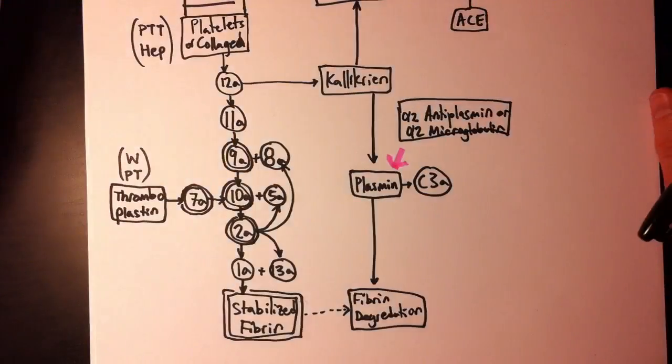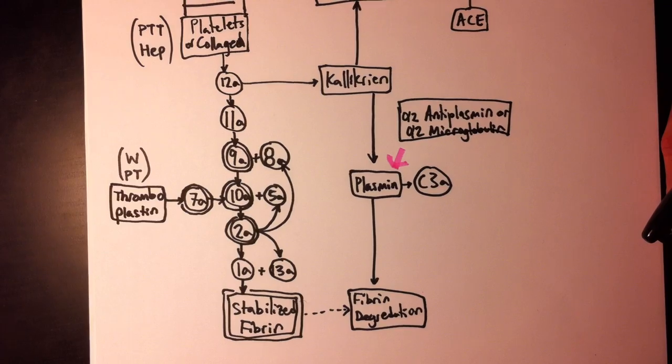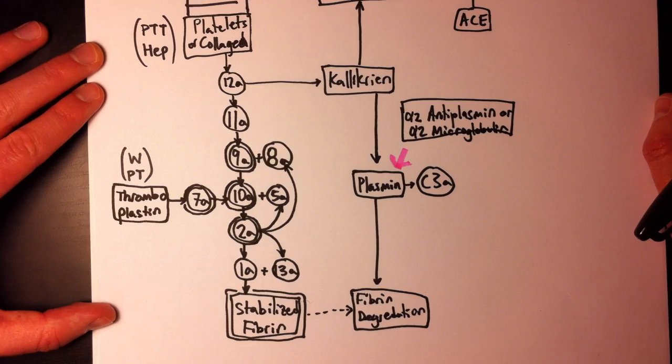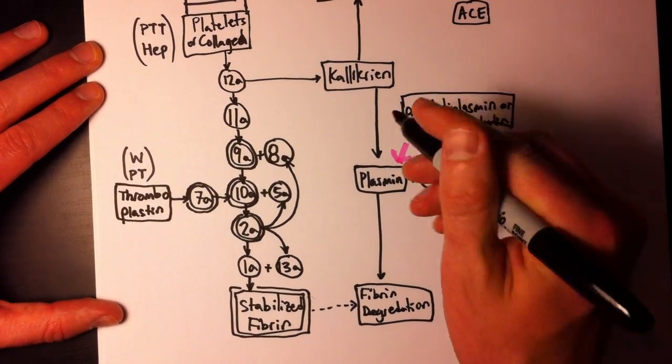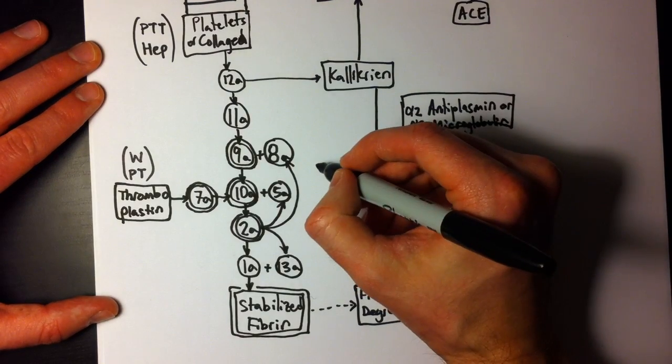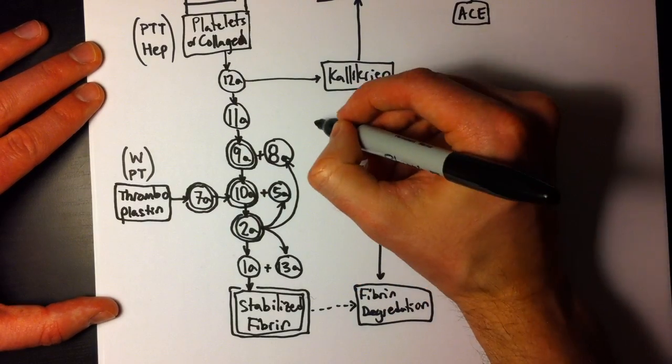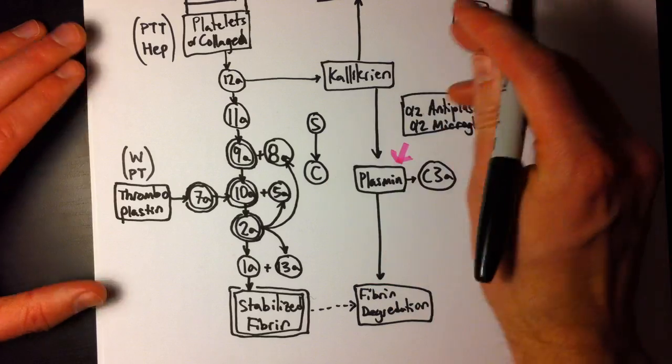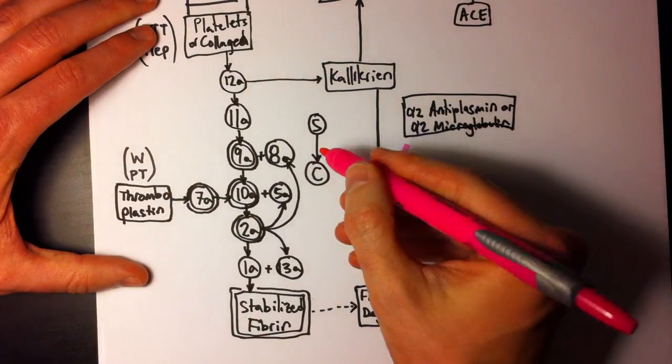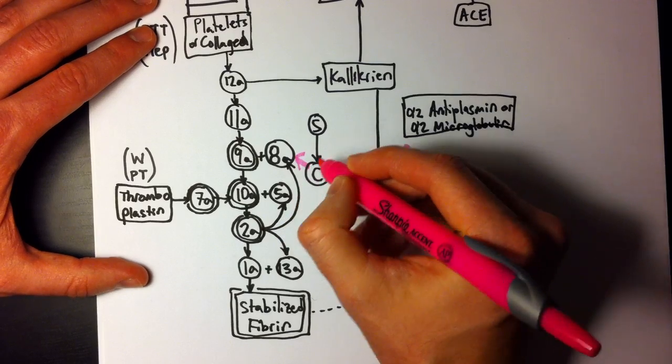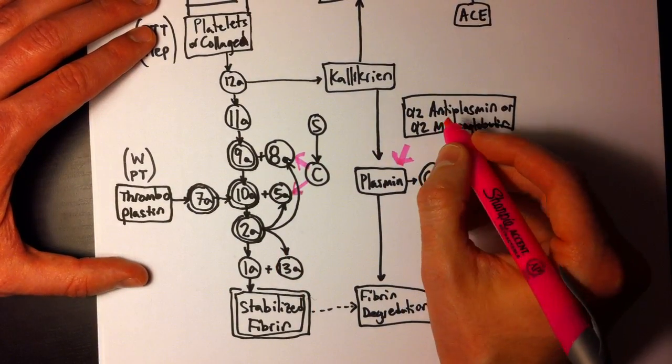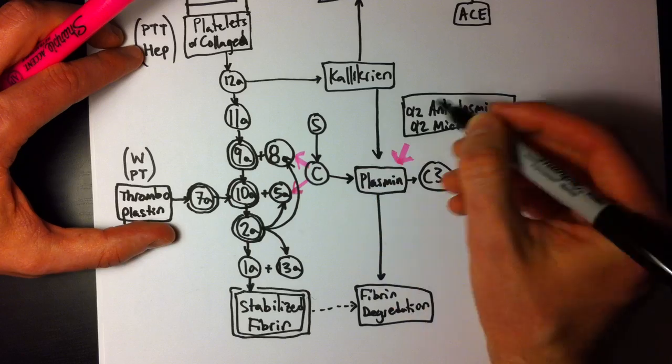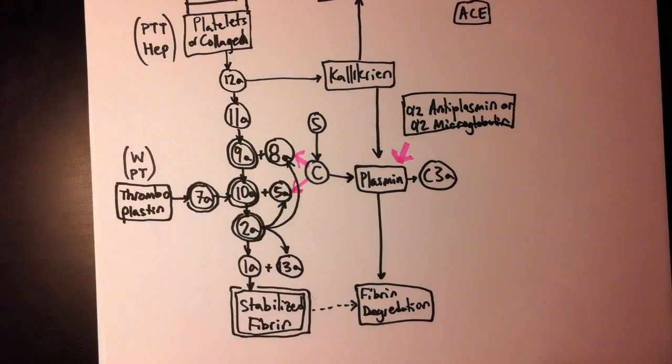We haven't mentioned yet proteins C and S. These are, we circled these guys back in the last video and said that they are important because they require vitamin K to be synthesized in their inactive state in the liver. Protein C and S also require vitamin K. So, here's C, here's S, S activates C, and then C does a few things. Among those, it breaks down 8, it breaks down 5, and, unless I'm mistaken, it activates plasmin. So, there's a whole lot going on.